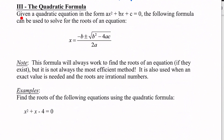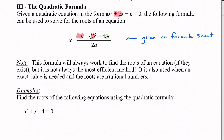For the quadratic formula: given a quadratic equation in the form ax² + bx + c = 0 — so we've got to make sure we have equals zero — the following formula can be used to solve for the roots of the equation. You'll have this formula on your formula sheet. The important things are the letters: b comes from the coefficient beside x, a is the coefficient of x², and c is just the constant term at the end.